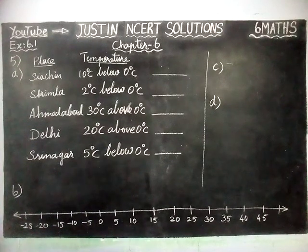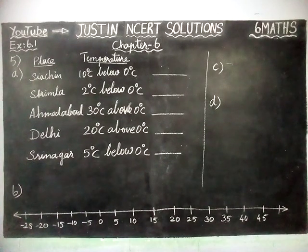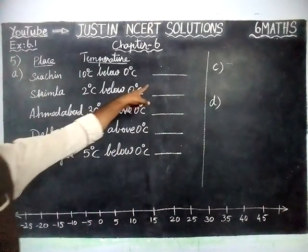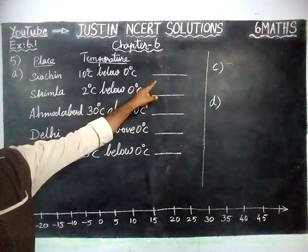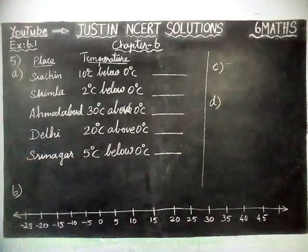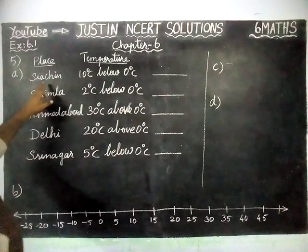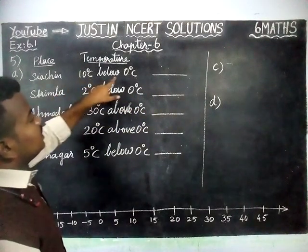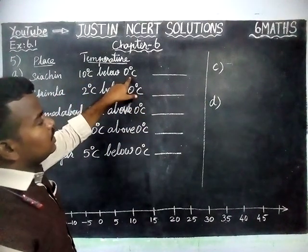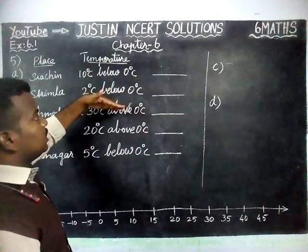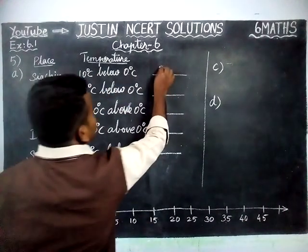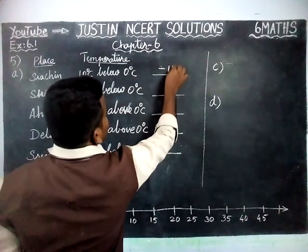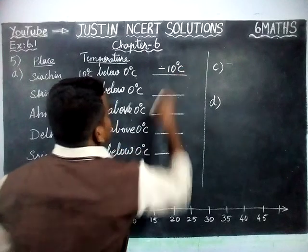The first question is: write the temperatures of these places in the form of integers in the blank column. We have to write in the form of integers. Siachin is 10 degree Celsius below 0, so below 0 degree is a negative number — minus 10 degree Celsius.